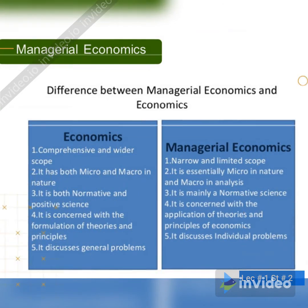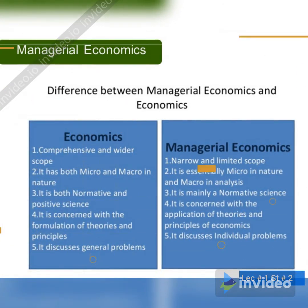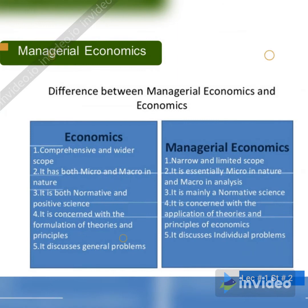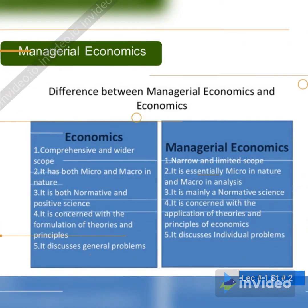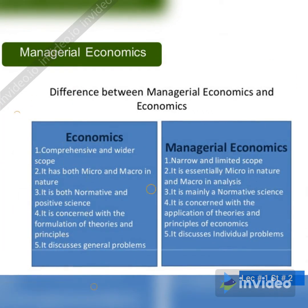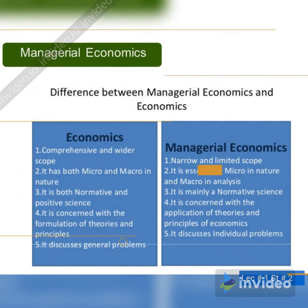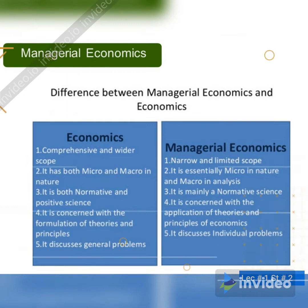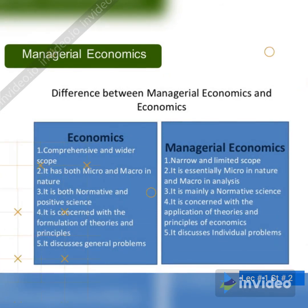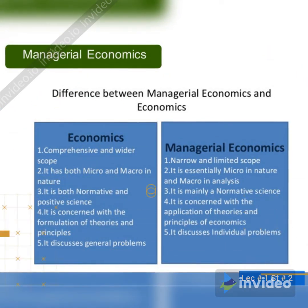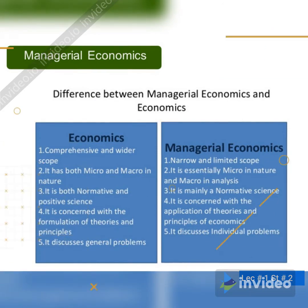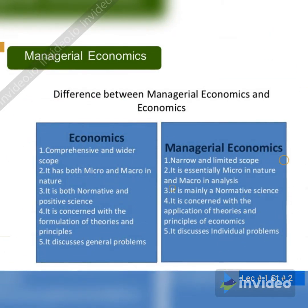In economics, it is concerned with the formulation of theories and principles. In managerial economics, it is concerned with the application of theories and principles — that is how it differentiates between the two. Economics discusses general problems, whereas managerial economics discusses individual problems. So economics operates at a big level, while managerial economics operates at an individual level.